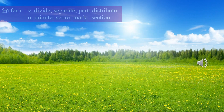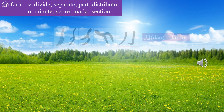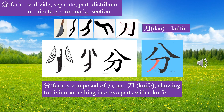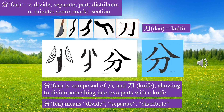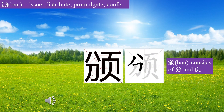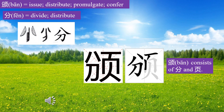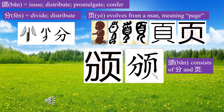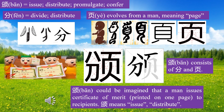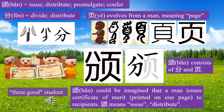Let's learn character Fan. Dao means knife. Fan is composed of Ba and Dao, showing dividing something into two parts with a knife. Fan means divide, separate, distribute. Character Ba consists of Fan and Ye. Fan means divide; Ye evolves from a man, meaning page. Ba could be imagined as a man issuing a Certificate of Merit printed on one page to recipients. Ba means issue, distribute — san hao xue sheng, three-good student.